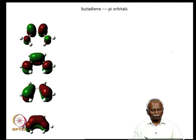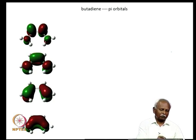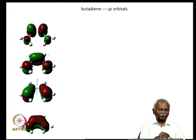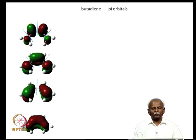Here are pictorial representations of these orbital interactions generated using a molecular orbital program like Gaussian. You have the four orbitals and can see the nodes very clearly — the single node between the two double bonds in psi 2, two nodes in psi 3, and three nodes in psi 4. The butadiene orbitals are kept in one plane with the metal below, interacting with the butadiene.